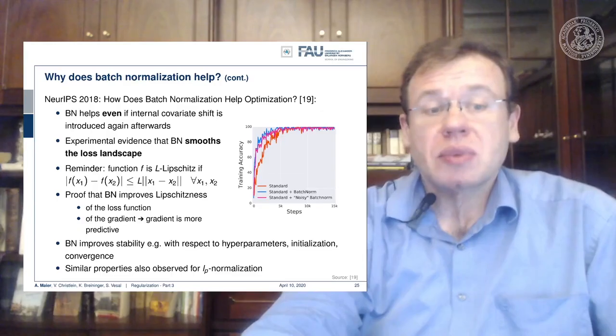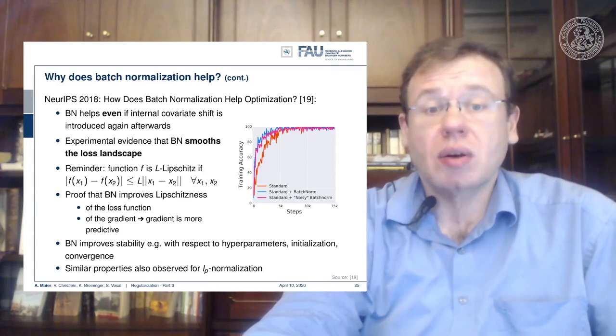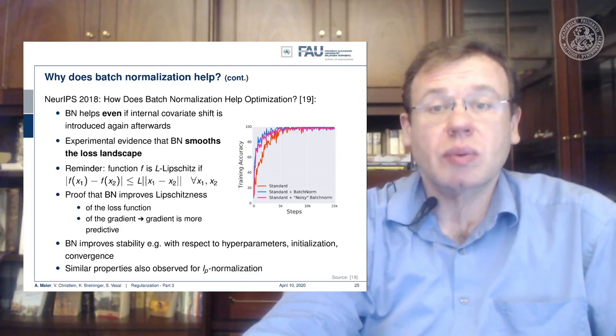There is nothing more practical than a good theory. So batch normalization improves stability with respect to hyperparameters, initialization, convergence. And similar properties, by the way, can also be observed for LP normalization. So that's also one way to go.